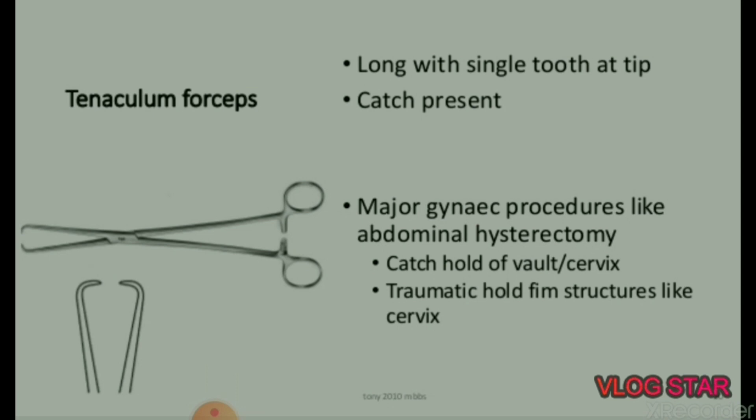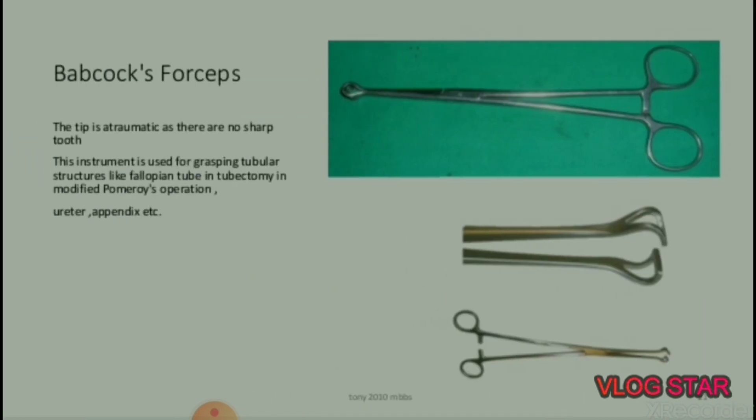Next instrument is Sternaculum forceps. It is long with a single tooth at the tip and has a catch. It is used in major gynae procedures like abdominal hysterectomy. It can catch hold of the vault or cervix and has a traumatic hold on firm structures like the cervix.